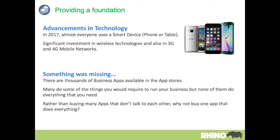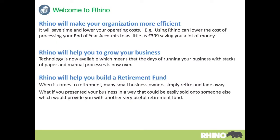So this led us on to the Rhino project. Rhino is designed to save you time and lower your operating costs. A real example of a saving is that there are accountants in the UK who will process your year-end accounts for as low as £399 per year.